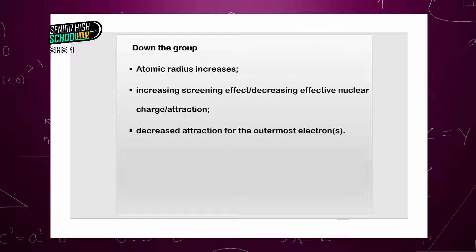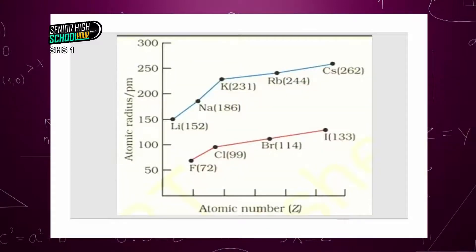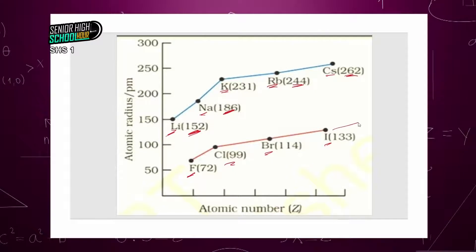So we can pick an example on a diagram looking at group 1 elements — lithium, sodium, potassium, rubidium, cesium — where the atomic radius in picometers increases. We can also look at group 7: fluorine, chlorine, bromine, iodine — if you extrapolate, the atomic radius will also go up as you move down the group.